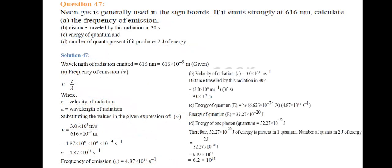Next question: Neon gas is generally used in sign boards. It emits strongly at 616 nanometers. Calculate the frequency of emission. Wavelength = 616 × 10⁻⁹ meters. Frequency ν = c/λ = 3.0×10⁸ / 616×10⁻⁹ = 4.87 × 10¹⁴ s⁻¹.